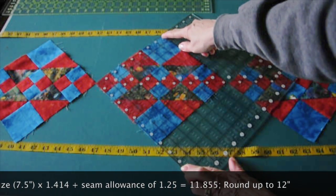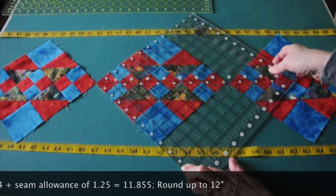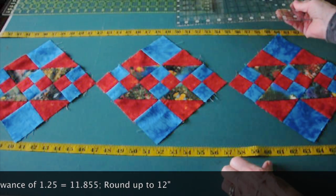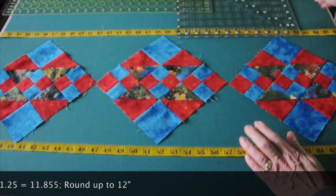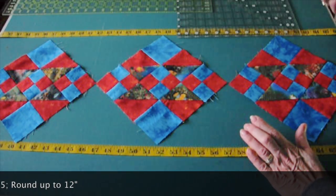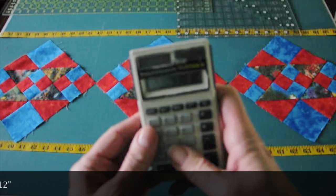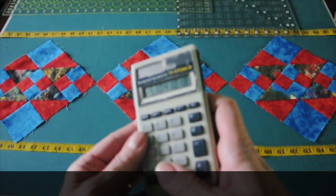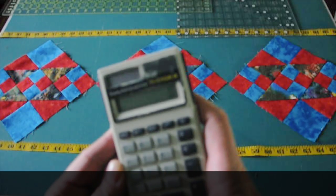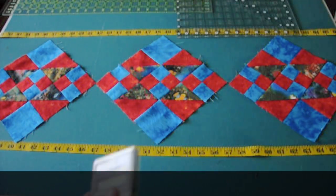So we will cut one 12-inch square because we need four setting triangles for this project, and there are four quarter square triangles per square that is cut. For a large quilt, you must determine the number of triangles you need and then divide that by four. Let's say you need 38 setting triangles. 38 divided by four equals nine and a half, so you will cut ten squares. Cut your quarter square triangles and then you will have two extras left over.